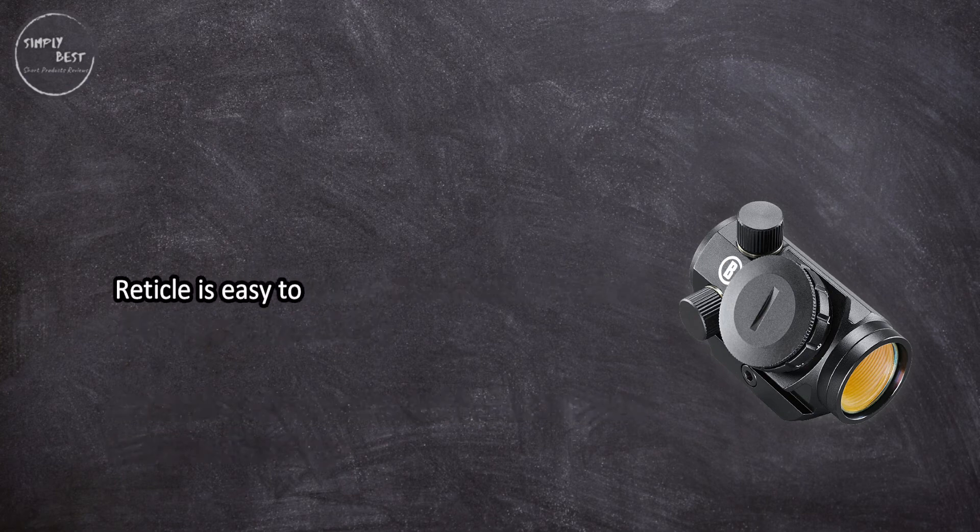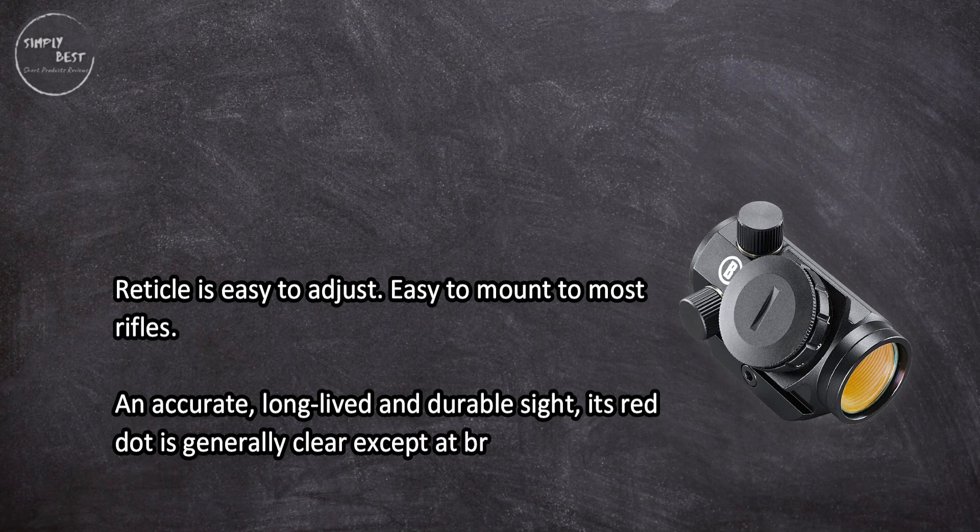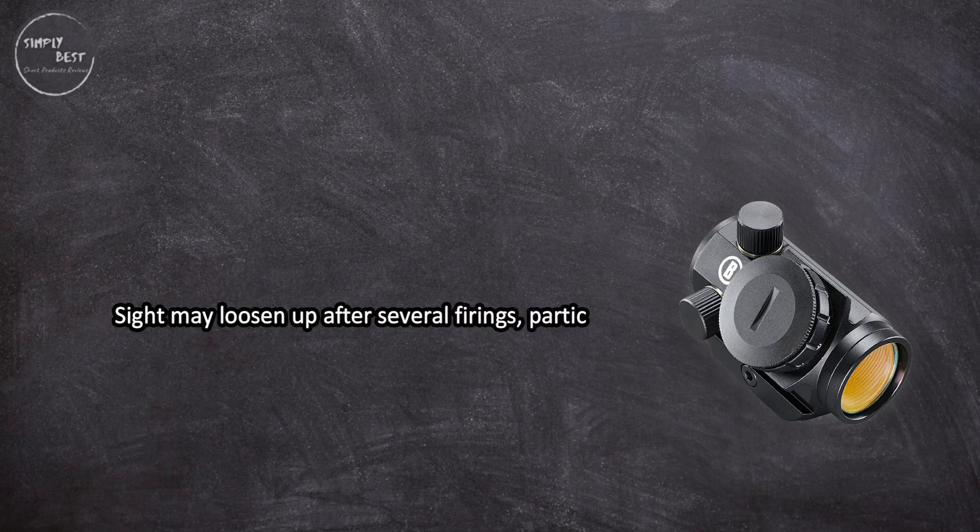Reticle is easy to adjust. Easy to mount to most rifles. An accurate, long-lived, and durable sight. Its red dot is generally clear except at brighter settings. Sight may loosen up after several firings, particularly with high powered rifles. Red dot is blurry for some users, especially at high settings.